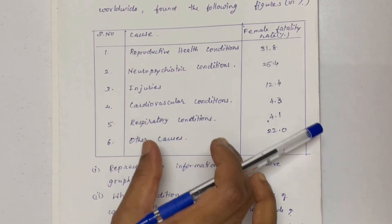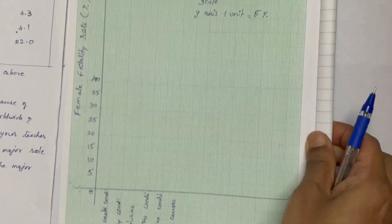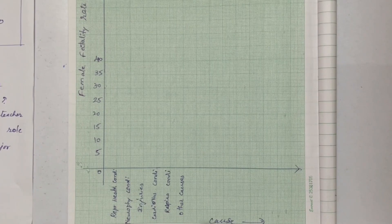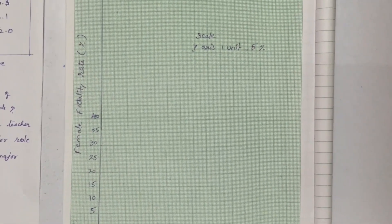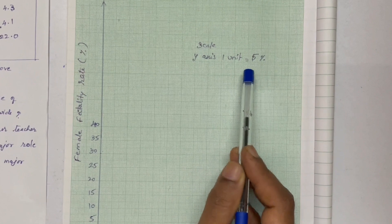So draw a bar graph. Y-axis is labeled as female fatality rate and Y-axis is generated by 1 unit equals to 5%.